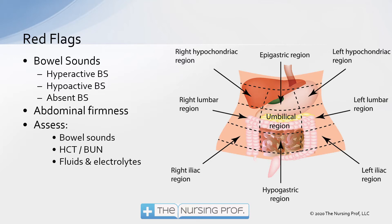Hypoactive bowel sounds are typically occurring once every one to three minutes — not very frequently. Absent bowel sounds require listening for a long time, since if we're having one bowel sound every three minutes, we'd have to listen a long time to hear an absent bowel sound. On the other hand, hyperactive bowel sounds may be five or more per minute — very frequent.